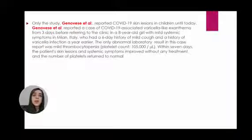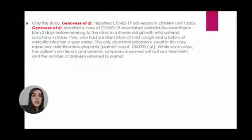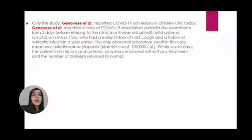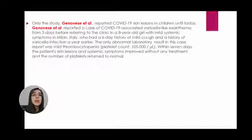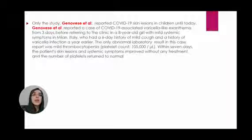That study reported a case of COVID-19 associated varicella-like exanthema appearing three days before referring to the clinic in an eight-year-old girl with mild systemic symptoms in Italy, who had a six-day history of mild cough and a history of varicella infection a year earlier. The only abnormal laboratory result in this case report was mild thrombocytopenia. Within seven days, the patient's skin lesions and systemic symptoms improved without any treatment and platelet count returned to normal.